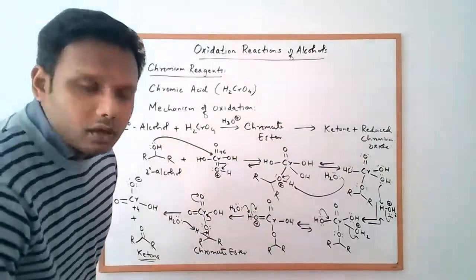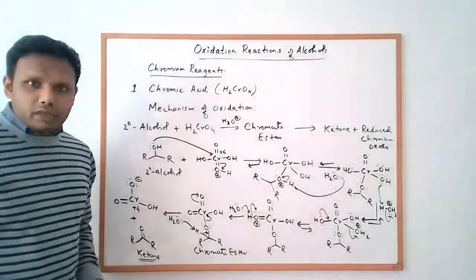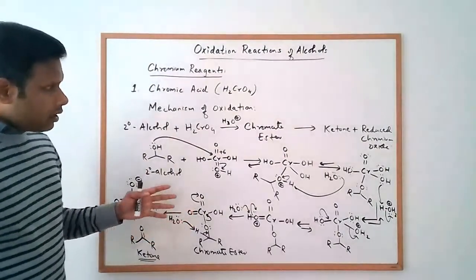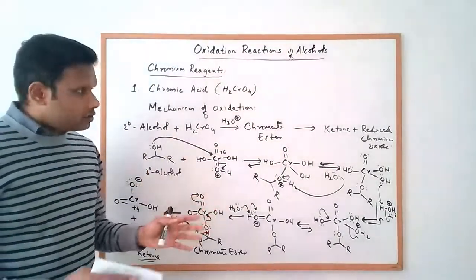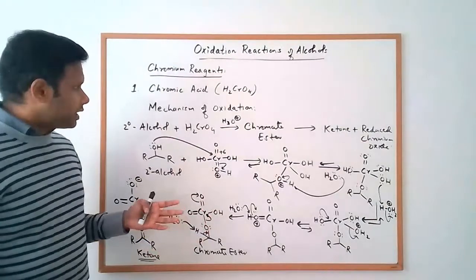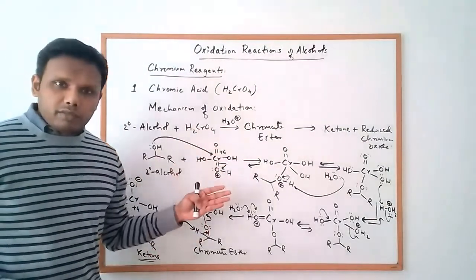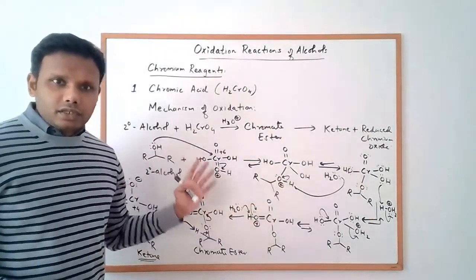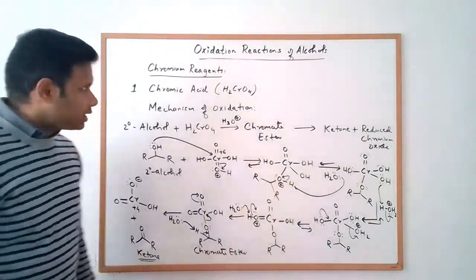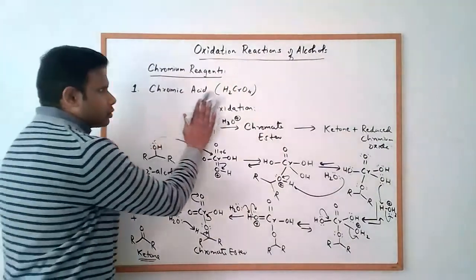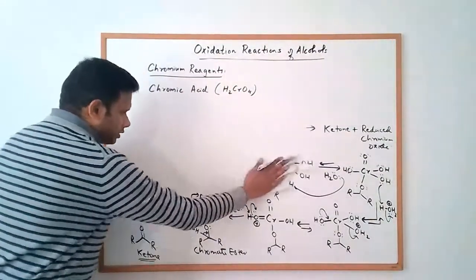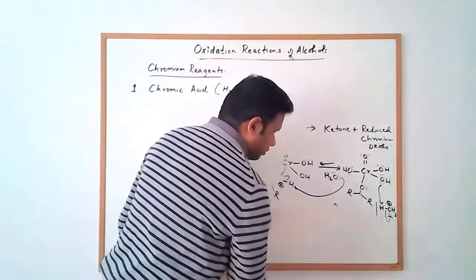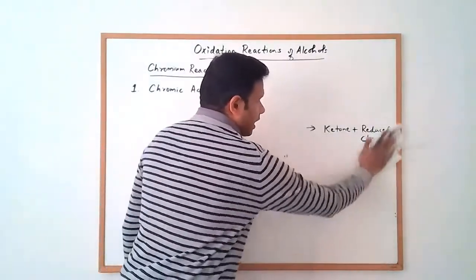That's the mechanism of oxidation using chromic acid. One drawback of this method is that, as we saw with primary alcohols, you cannot stop at the aldehyde — it takes you all the way to the carboxylic acid. So there's another chromium reagent that is useful for oxidizing primary alcohols selectively to aldehydes.